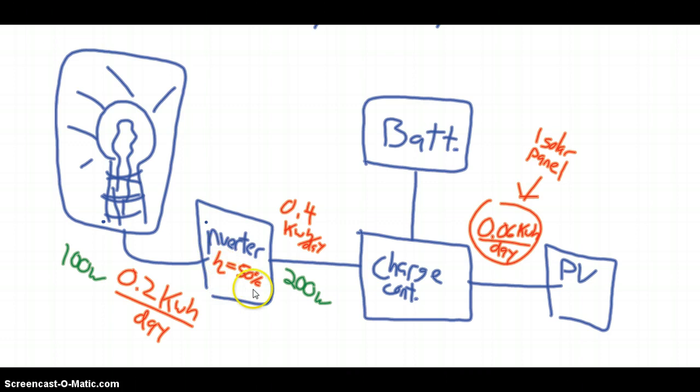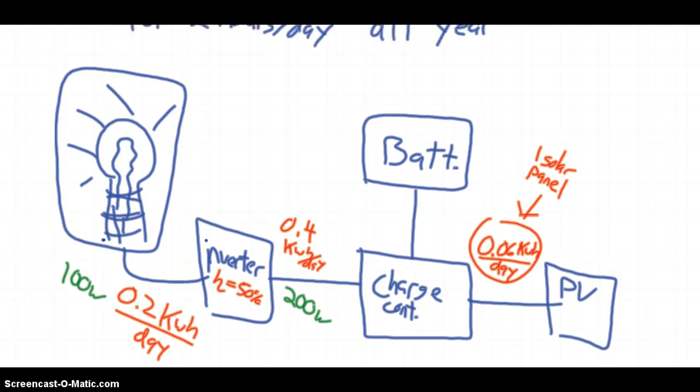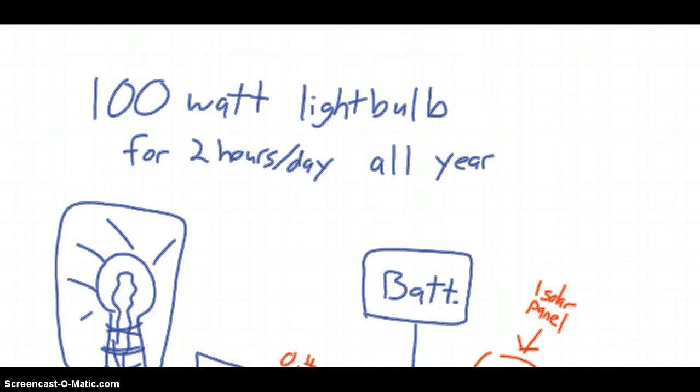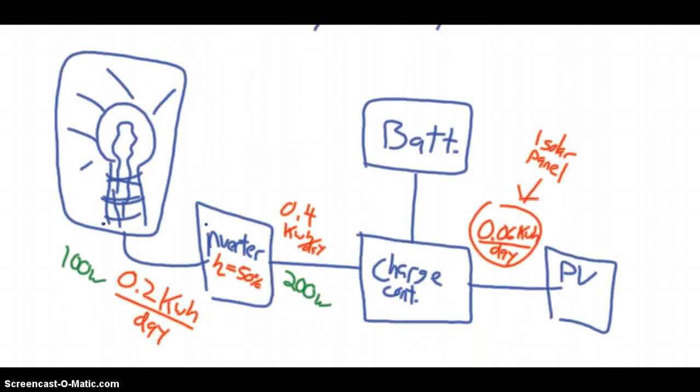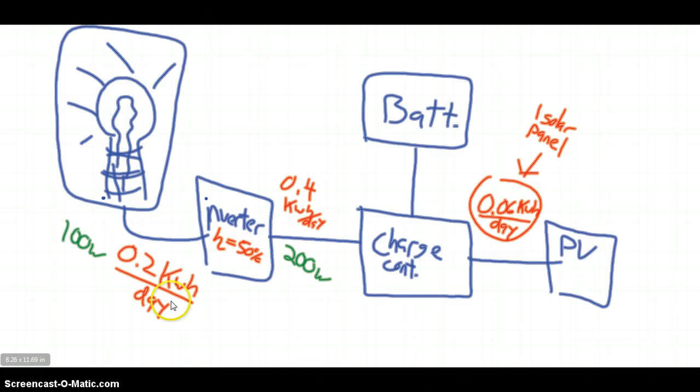So what we're going to say is that our inverter is 50% efficient, so that's going to be one of our assumptions. And the first thing we're going to know is that we have a 100 watt light bulb. So we know the green numbers are going to be power here. The red numbers are numbers that we get later, and we'll come back to that. So first off, the 100 watt light bulb, if we do our equation of efficiency, we know that 200 watts has to go into the inverter to produce 100 watts at the light bulb. So the first thing we know is that our charge controller is 200 watts.